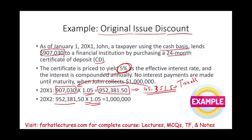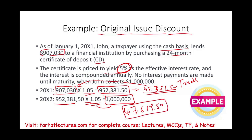In year two, this money stays in the account and earns another 5%. Taking $952,381.50 times 0.05, John earned $47,619.50 in year two, which is also taxable. In year two, John received the money and can pay; but in year one, John did not see or touch this money and could face a penalty for early withdrawal. Yet John still must pay taxes on it. This is what we mean by the money being taxable as it accrues, regardless of whether you are a cash basis taxpayer or not.